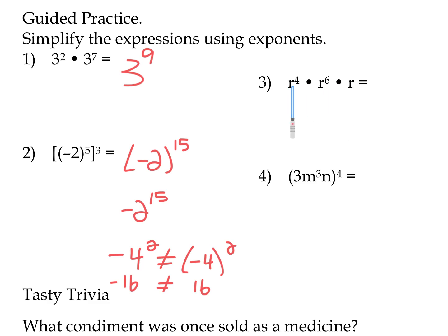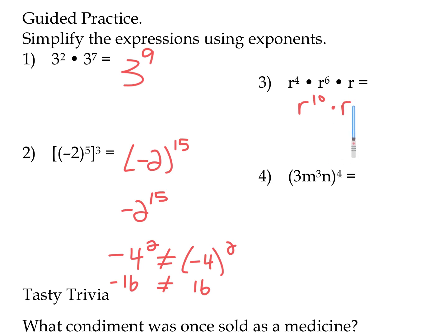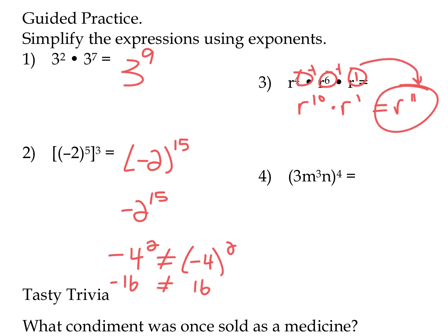Number 3: R to the 4th times R to the 6th times R. Three bases that are the same. Multiplying the first two gives R to the 10th times R. This R is to the first power — if we don't write an exponent, there's a power of 1. So we add 4, 6, and 1 together, giving us R to the 11th.